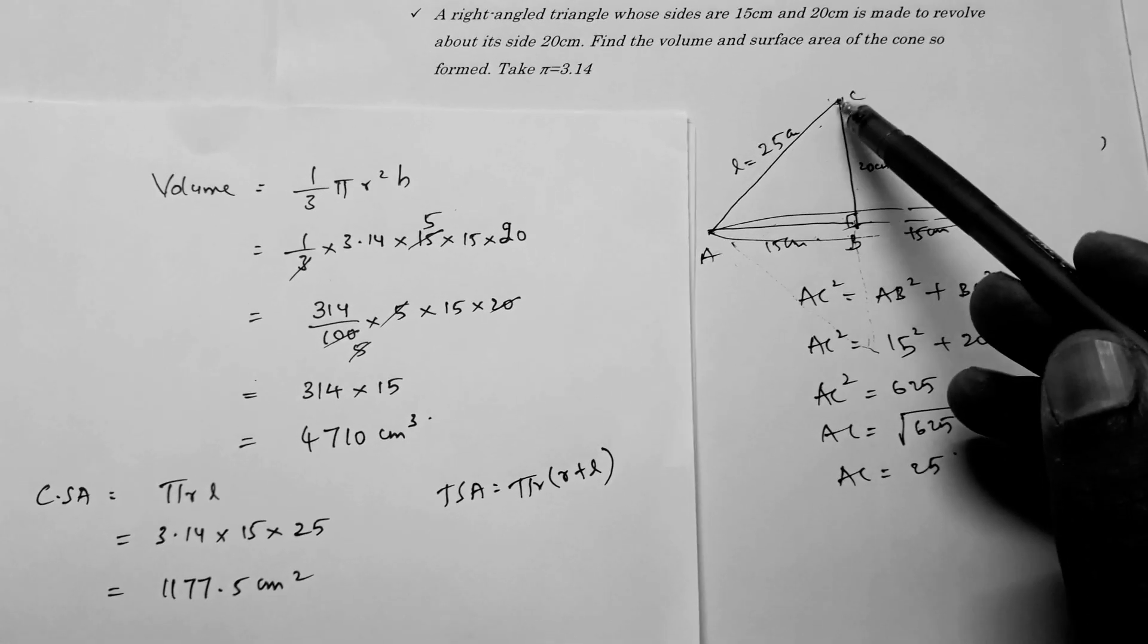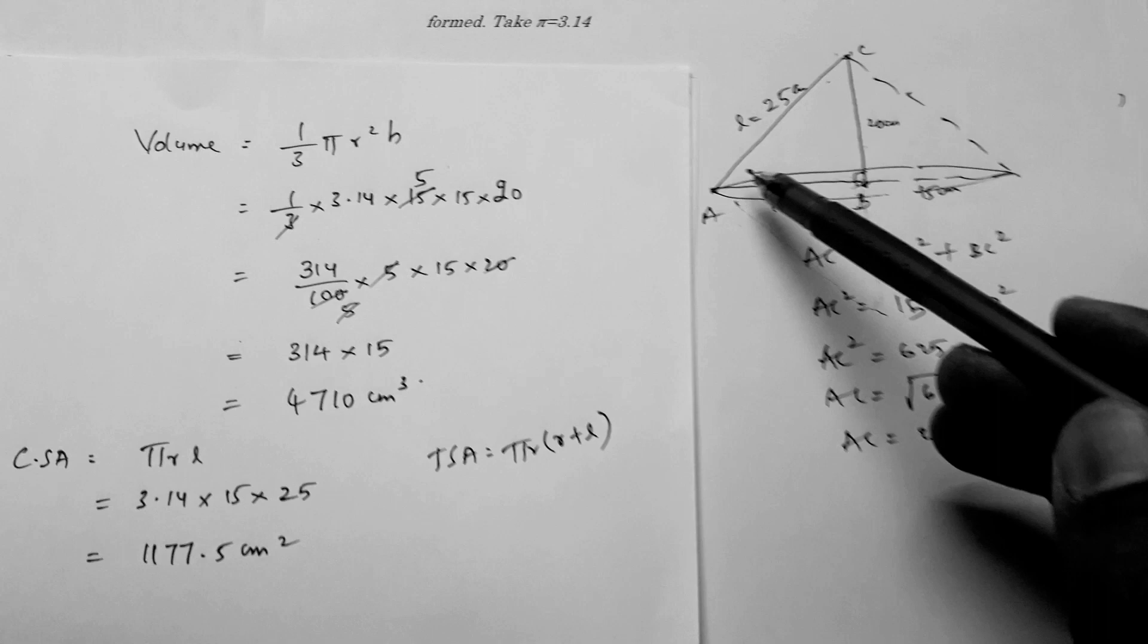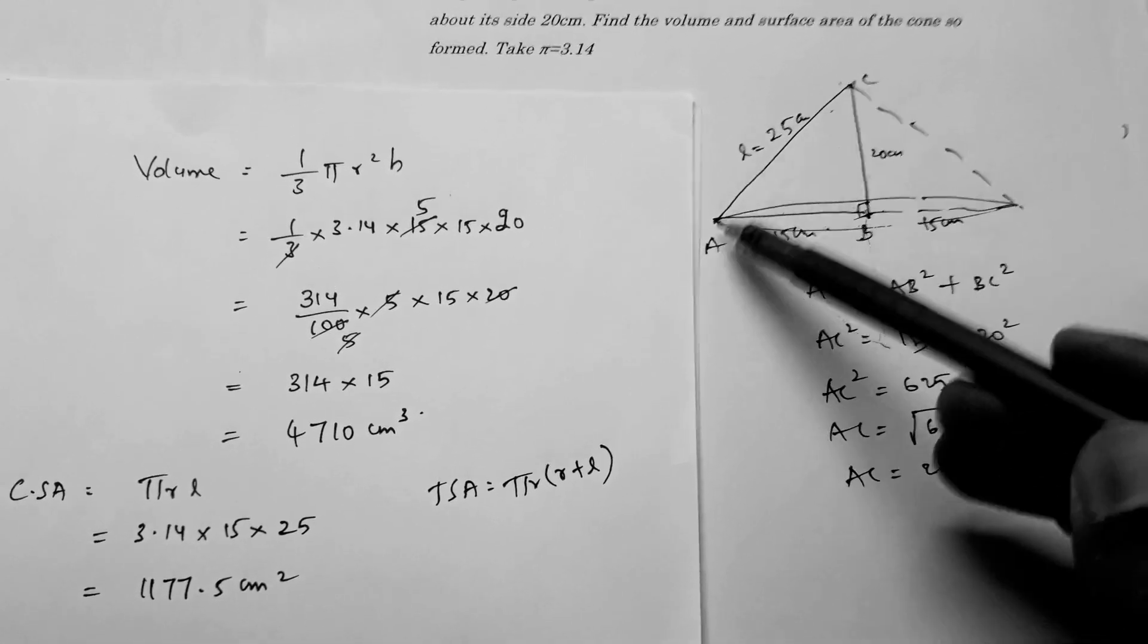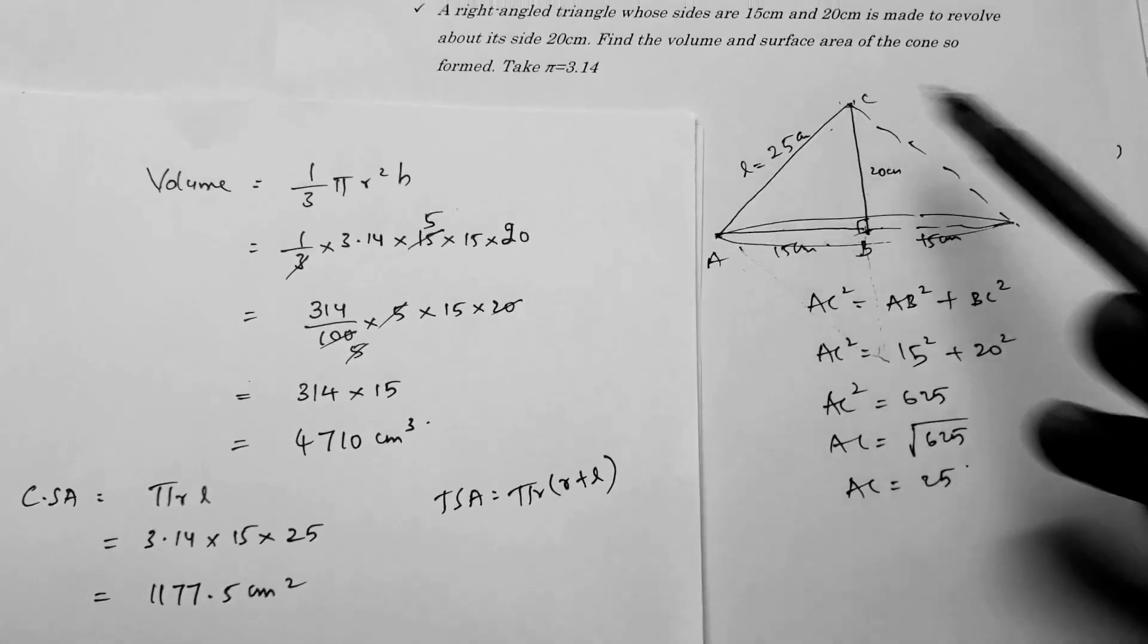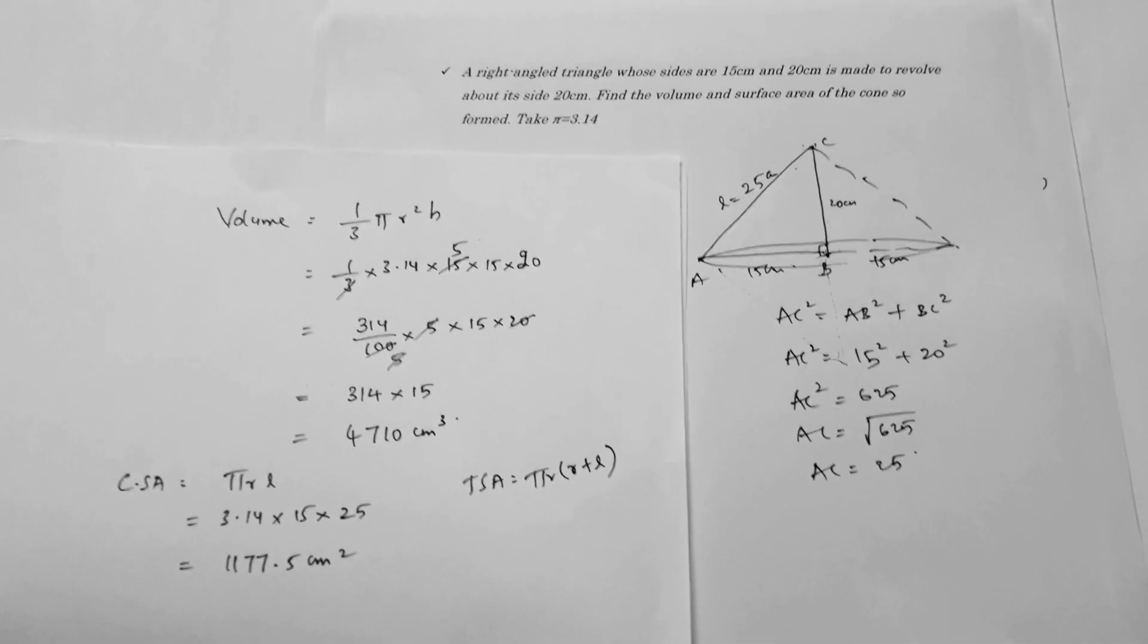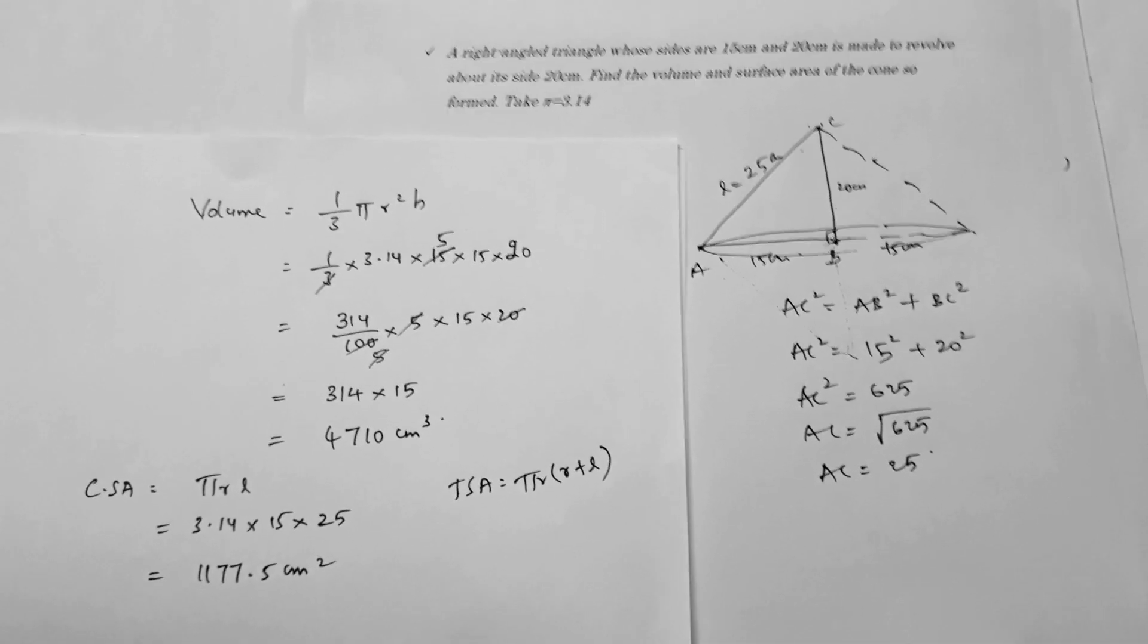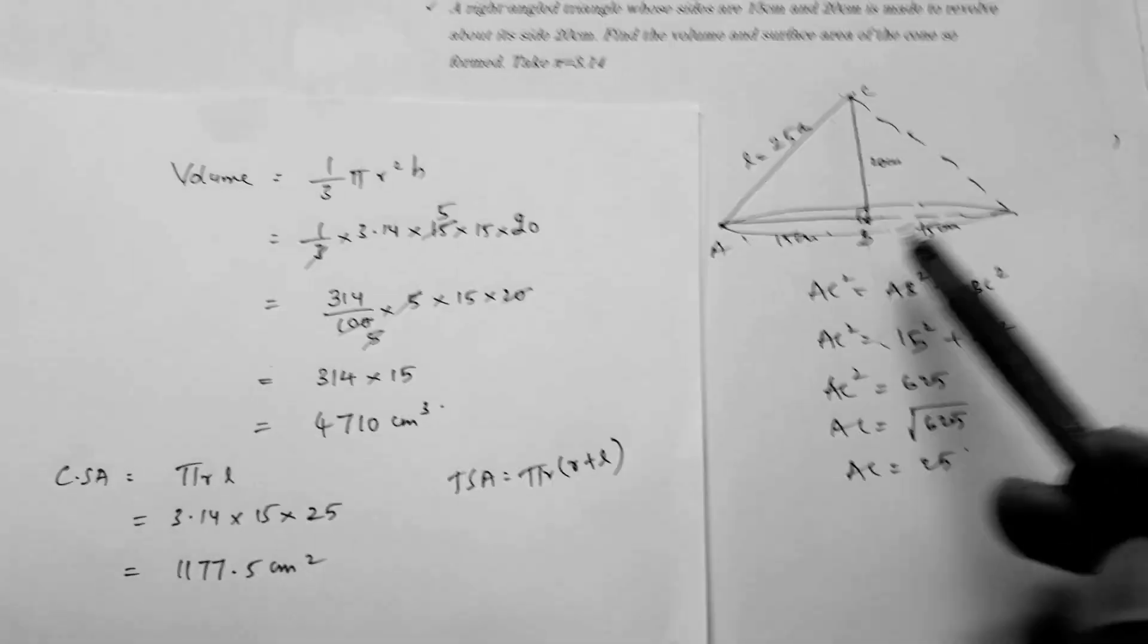But when it's revolved along its hypotenuse - I've already discussed in one video - when it's revolved along its hypotenuse, we'll get a double cone. So these three problems are related regarding revolving about its sides.